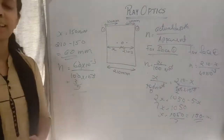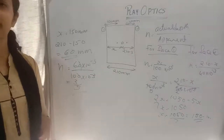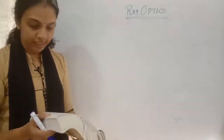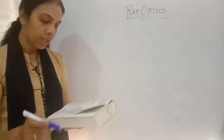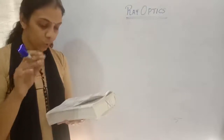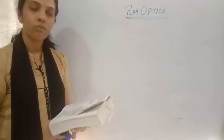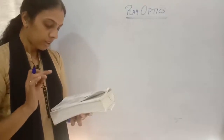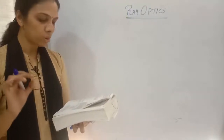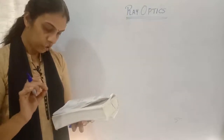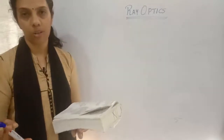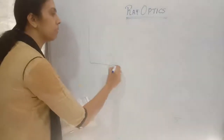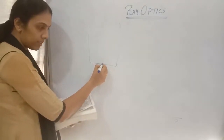Next question relating to total internal reflection: A point source of light S is placed at the bottom of a vessel containing a liquid of refractive index 5/3. A person is viewing the source from above the surface. There is an opaque disc of radius 1 cm floating on the surface, with its center vertically above the source. Liquid from the vessel is gradually drained out. What is the maximum height of the liquid for which the source cannot be seen at all?